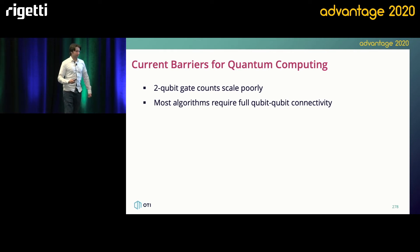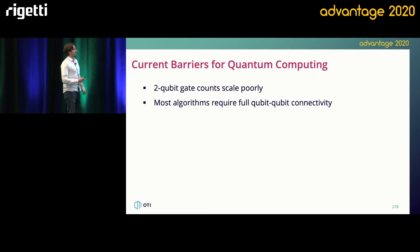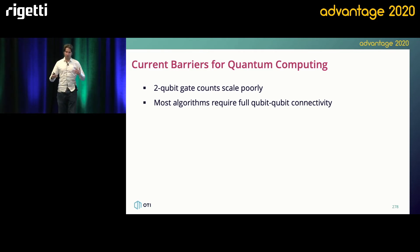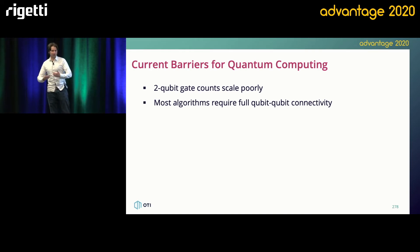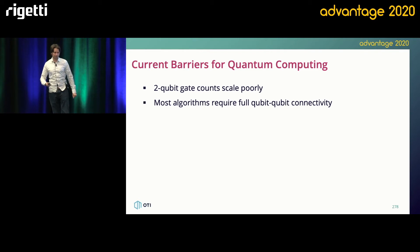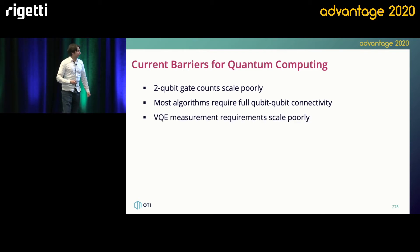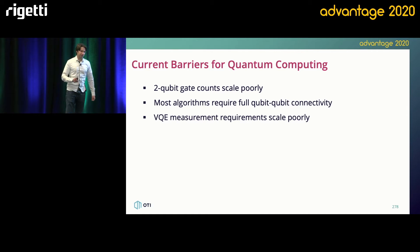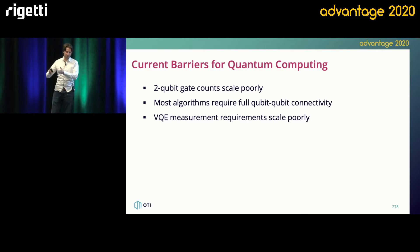Most algorithms require full qubit-to-qubit connectivity, and that's a very important distinction — most architectures don't have all qubits fully interconnected. So you're going to have to do additional swap gates on top of all your CNOT gates. Furthermore, the VQE measurement actually scales fairly poorly with problem size: as the problem gets bigger, you need to sample more and more Hamiltonians in your VQE problem.